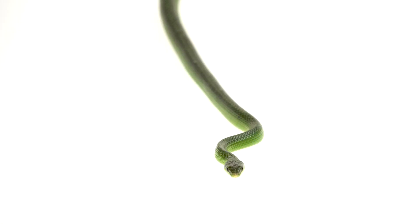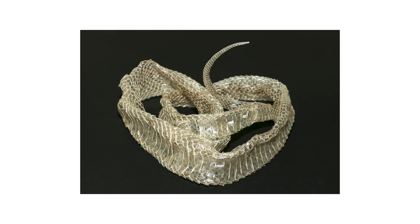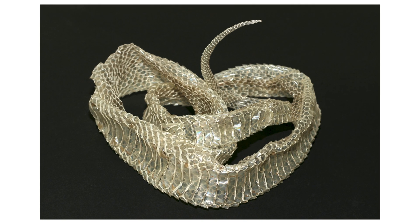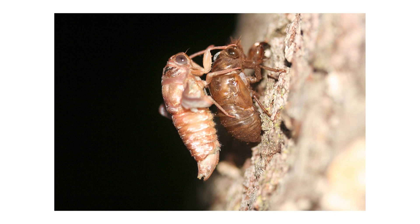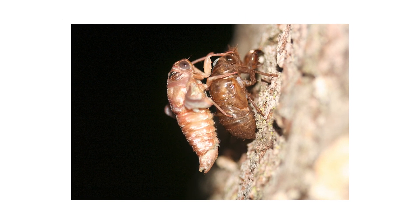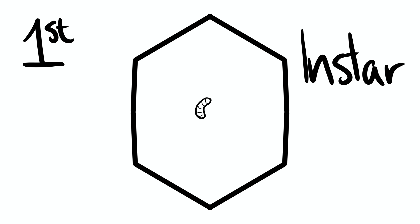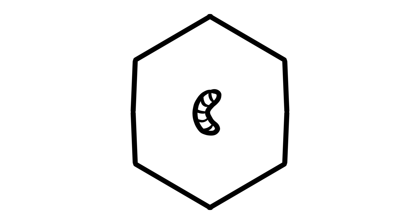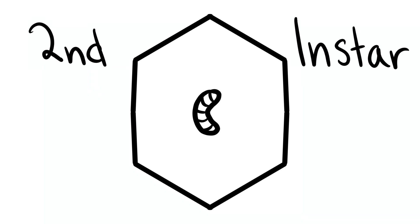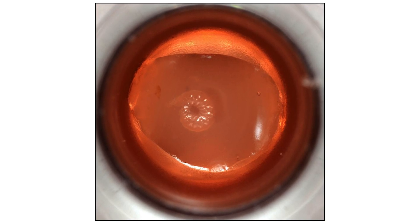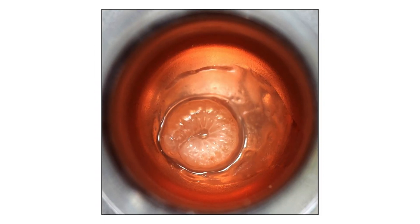Honeybees actually molt — most beekeepers don't know about this. As that larva emerges from its egg, it's a first instar larva. After its first molt, it becomes a second instar larva. After its second molt, it becomes a third instar larva, and so forth. The first four larval instars — one, two, three, and four — are the larval instars during which the larva eats and consumes food.